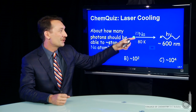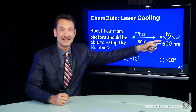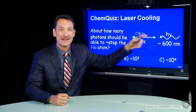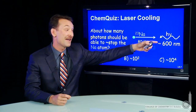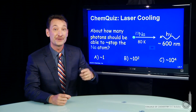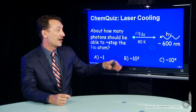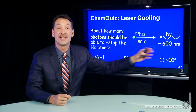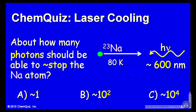The sodium atom is impacted by the wavelength of light behaving like a particle, behaving like a photon. About how many will stop that? About 1, about 100, about 10,000. Think about that and make your selection.